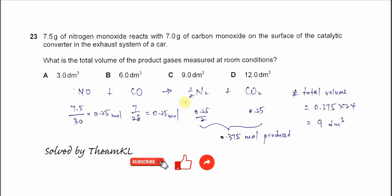Question 23: 7.5 grams of nitrogen monoxide reacts with 7 grams of carbon monoxide on the surface of a catalytic converter in the exhaust system of a car. What is the total volume of the product gases measured at room condition?